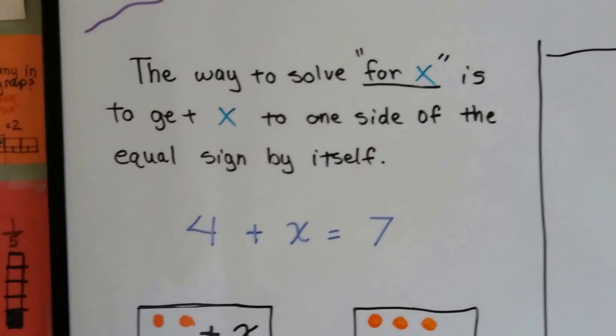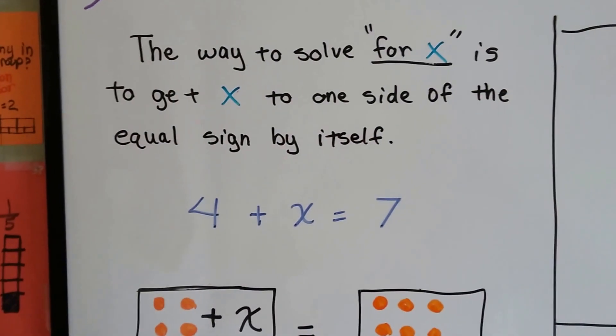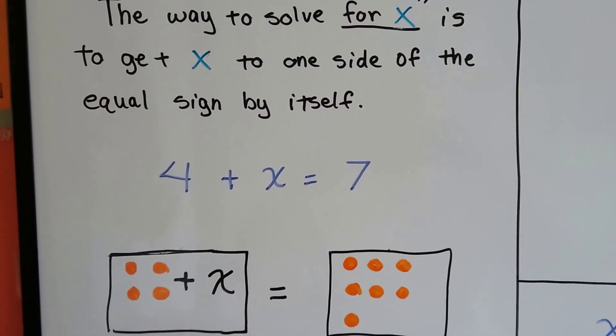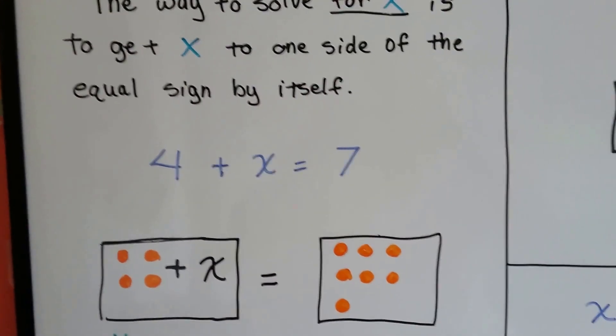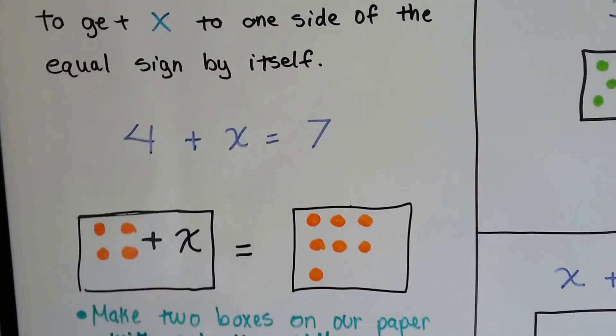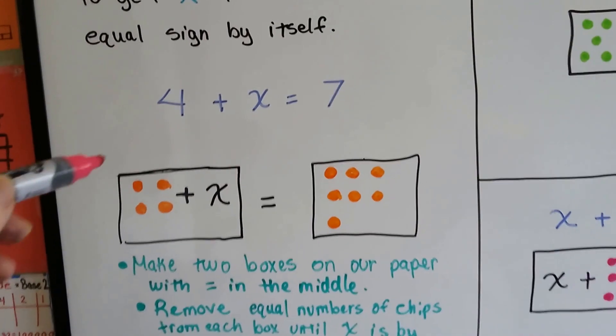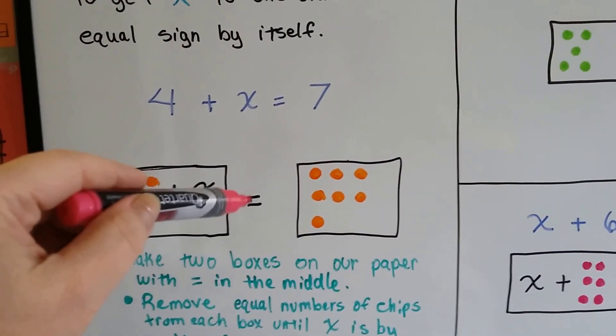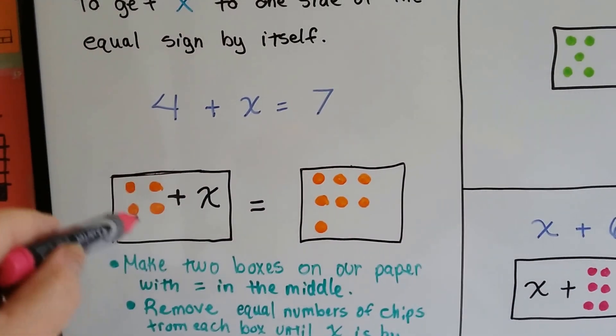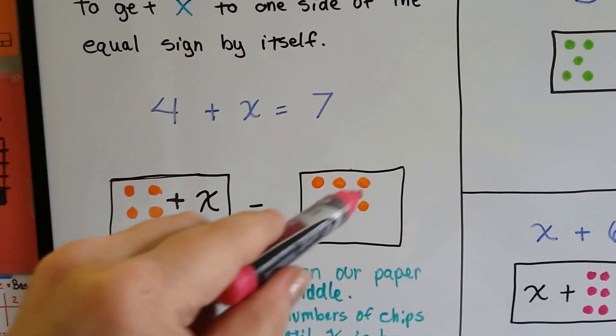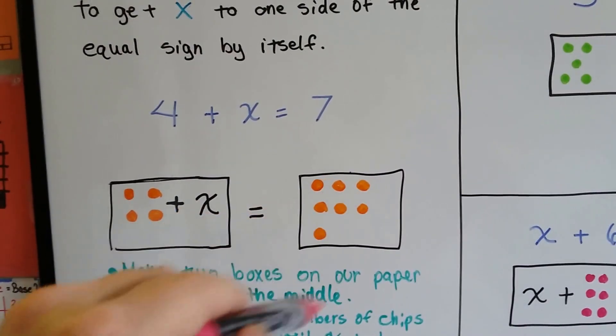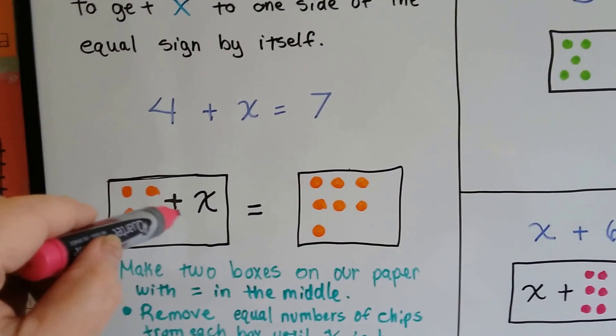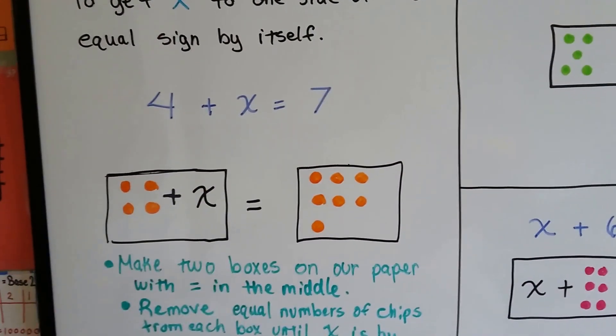The way to solve for x is to get x to one side of the equal sign by itself. If we have 4 plus x equals 7, to model this, we make two boxes on our paper with the equal sign in the middle. We put this side of the equation in this box and the sum in this box. We have 4 chips plus x and 7 on this side.